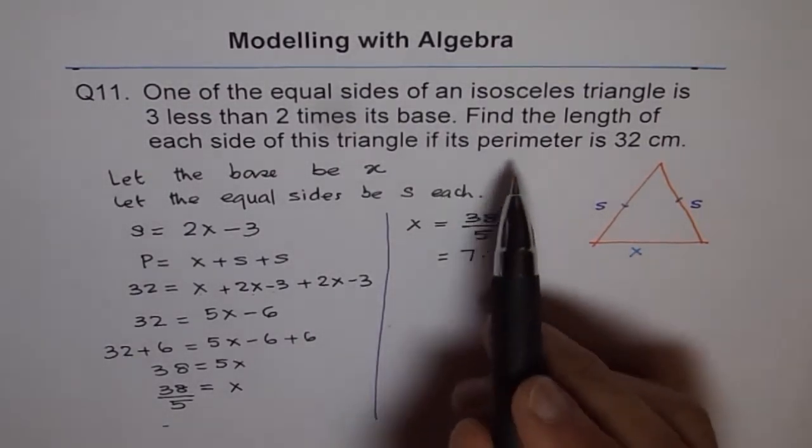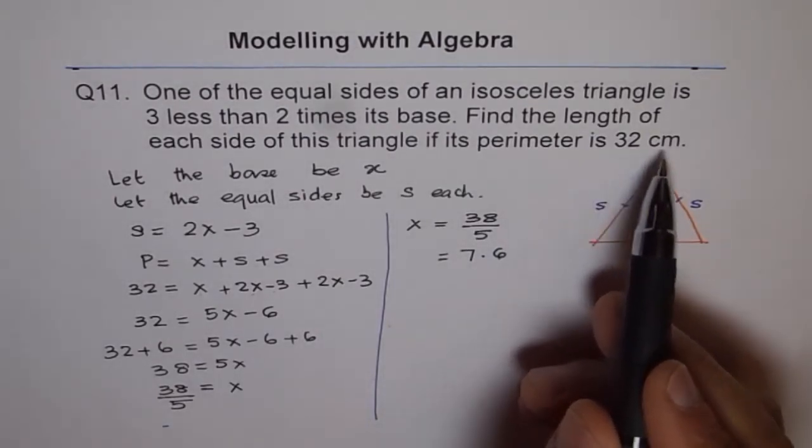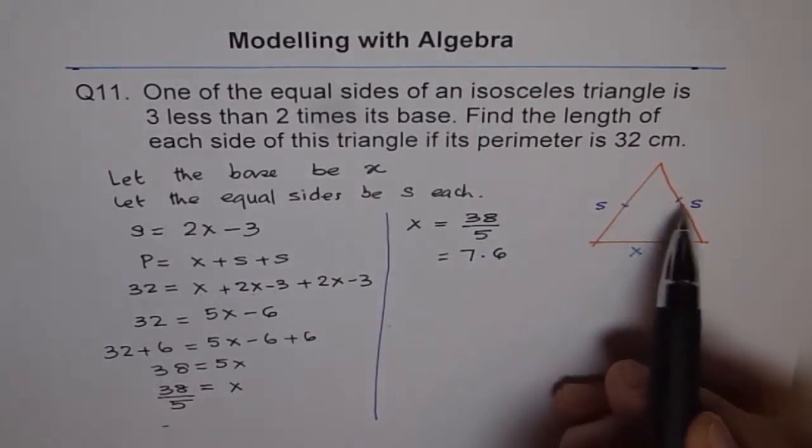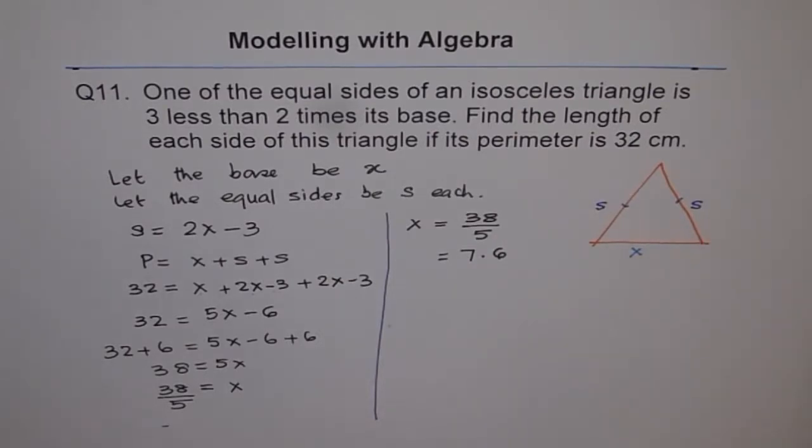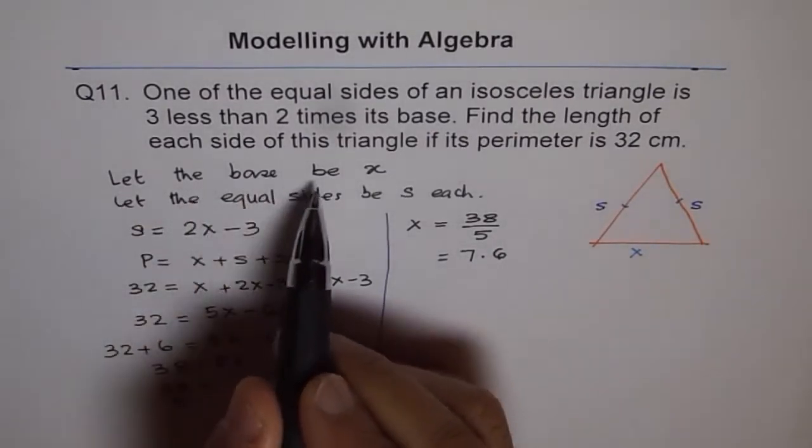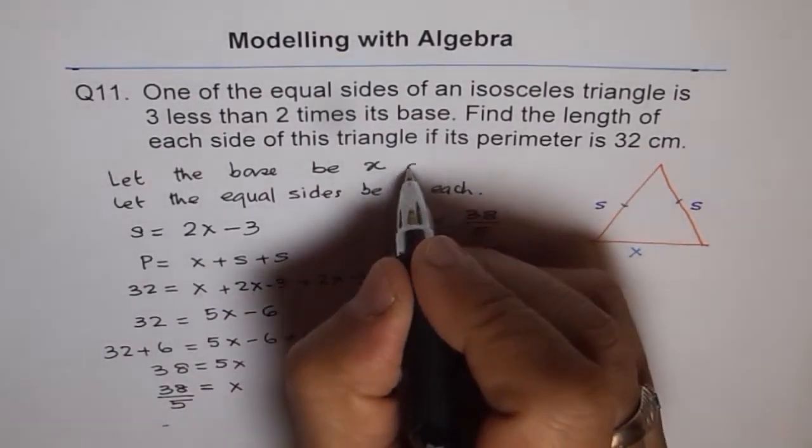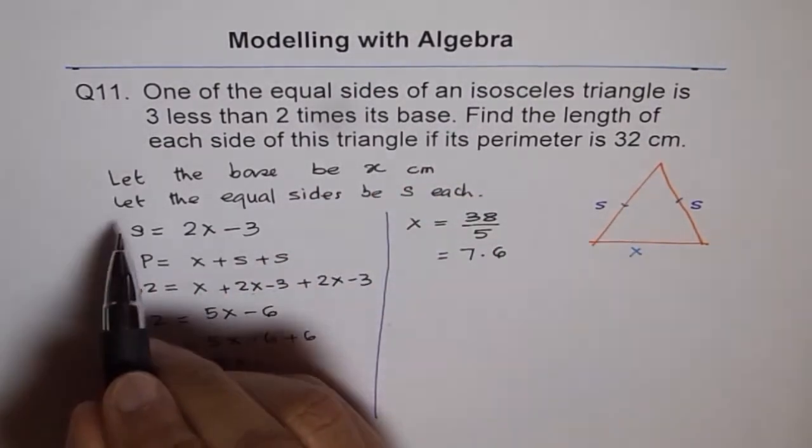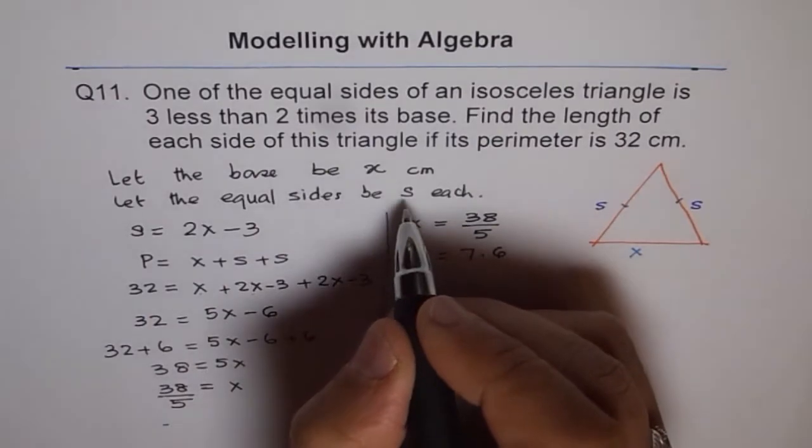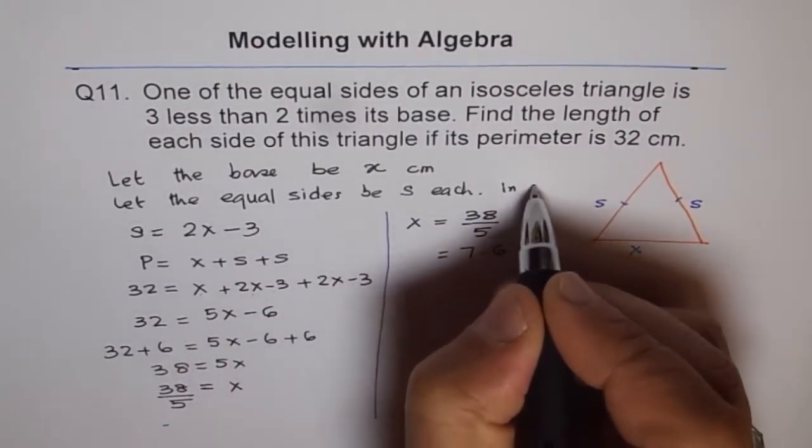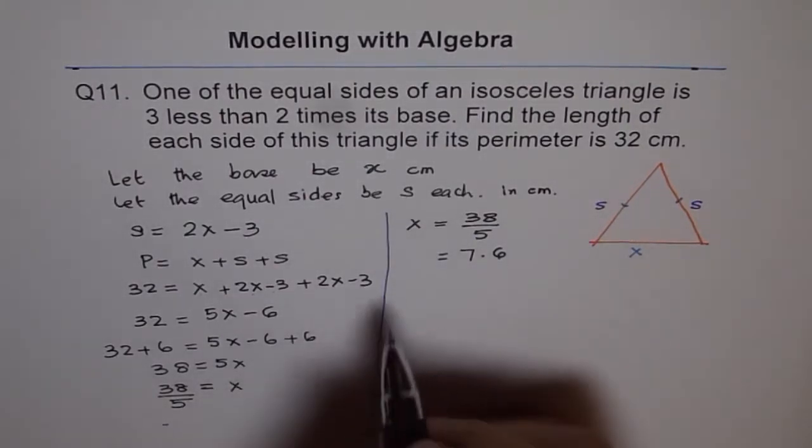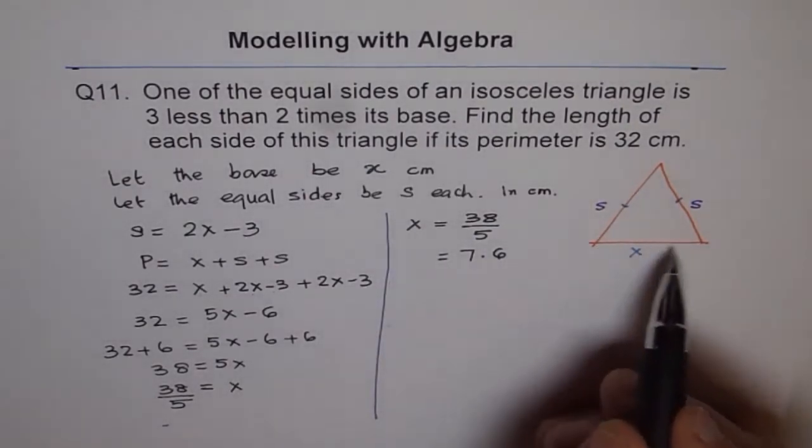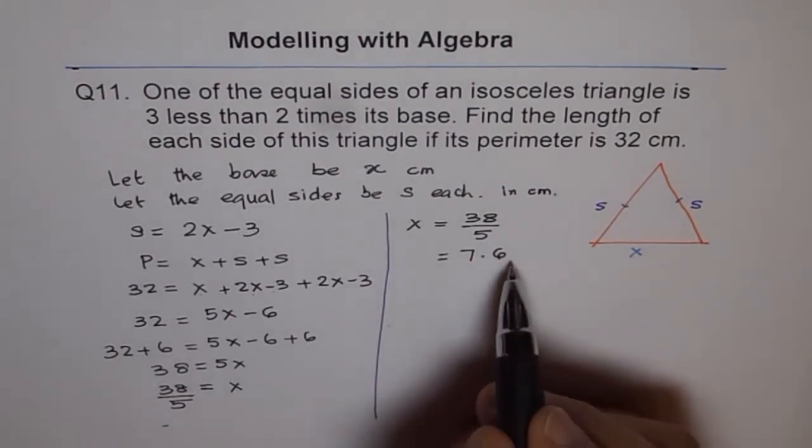Remember, perimeter was given to us in centimeters. Therefore, all these side lengths will be in centimeter. When you define your variables, you could have written: Let the base be x centimeter. Let equal sides be s each in centimeter. You can include units while defining your variables. So x, the base, is 7.6 centimeters for us.